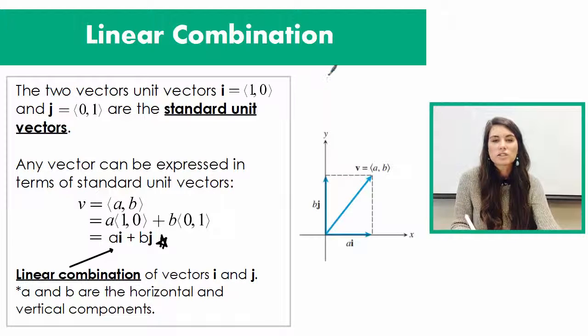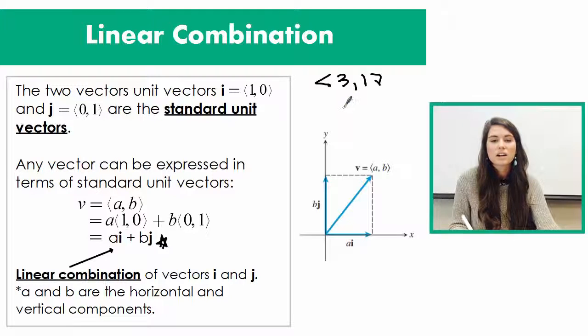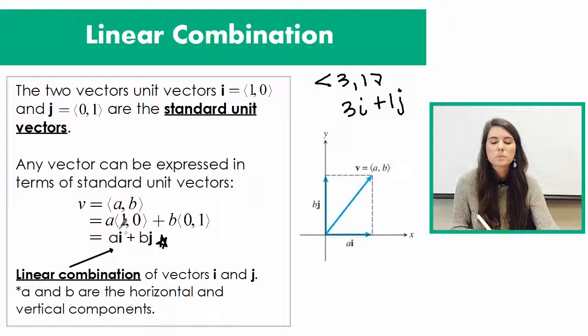a linear combination. So just so we can make sure we really know how to do that, if I give you the vector (3, 1), its linear combination form would be 3i plus 1j. And that's because we